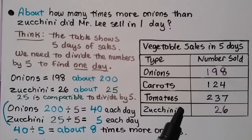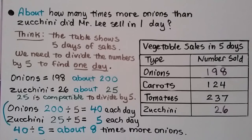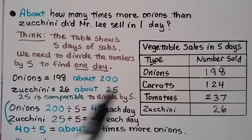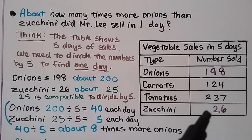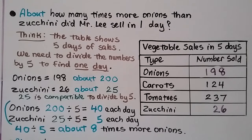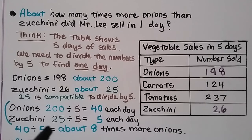Now we have a new table showing vegetable sales over 5 days. The question asks: about how many times more onions than zucchini did Mr. Lee sell in 1 day? Since the table shows 5 days, we divide by 5. Onions are 198, which is about 200; 200 divided by 5 equals 40 per day. Zucchini is 26, which is about 25; 25 divided by 5 equals 5 per day. Then 40 divided by 5 equals 8, so he sold about 8 times more onions than zucchini each day.